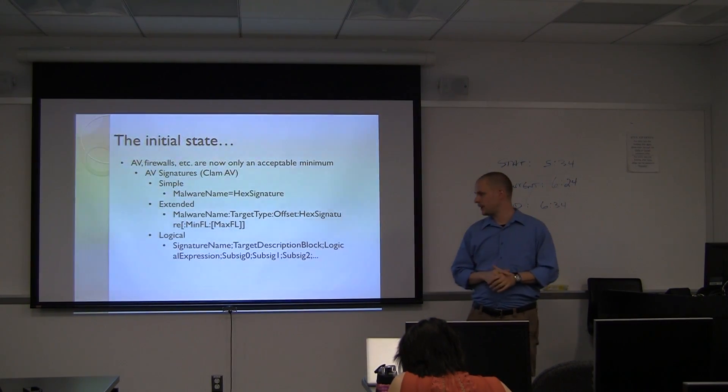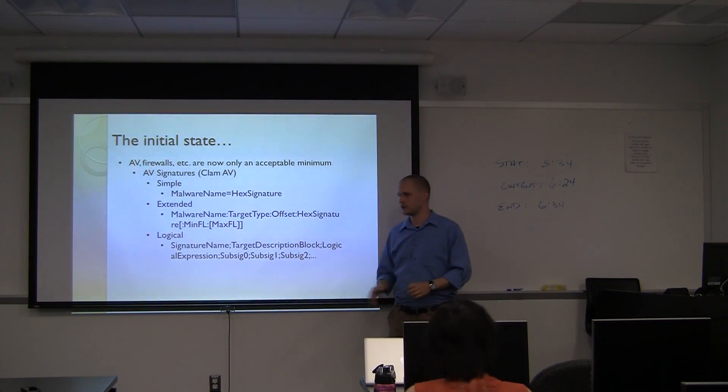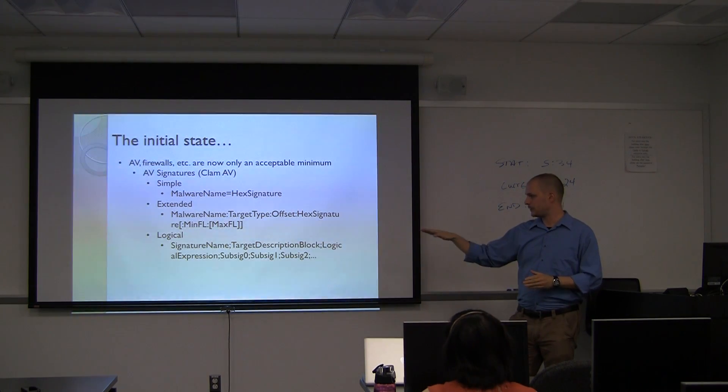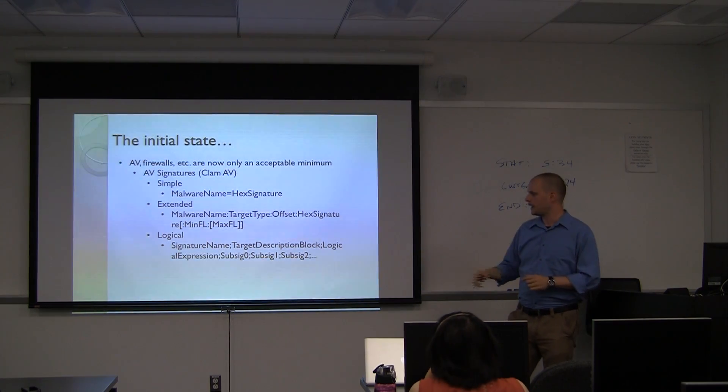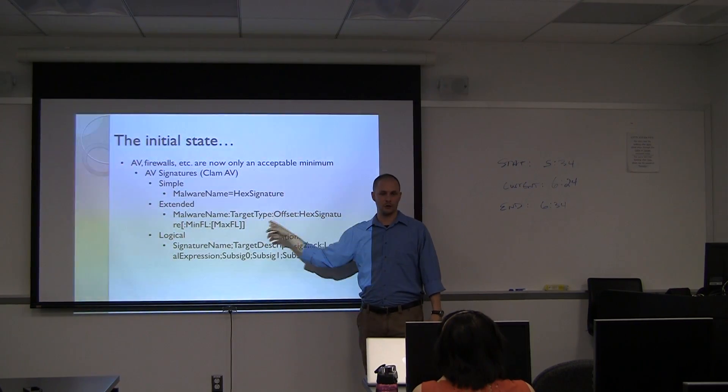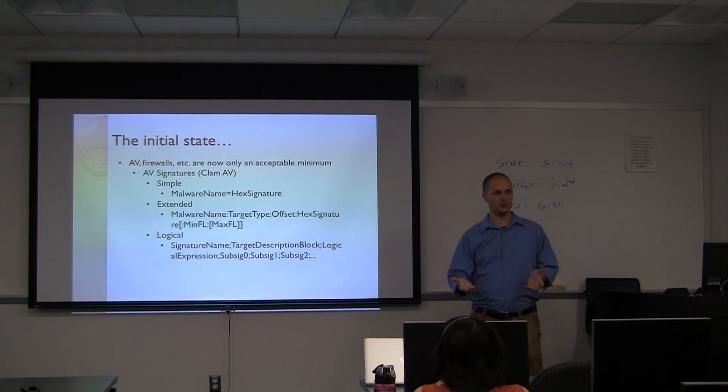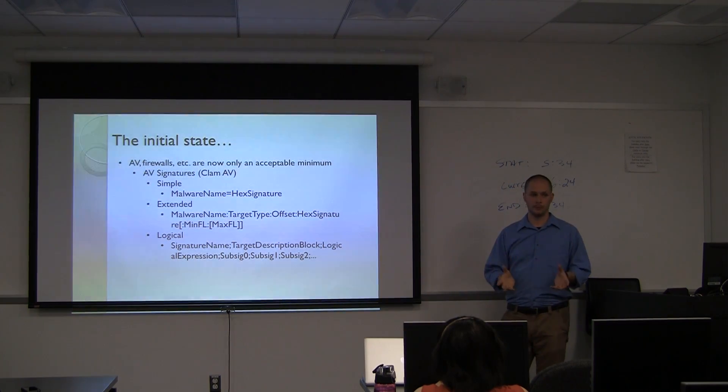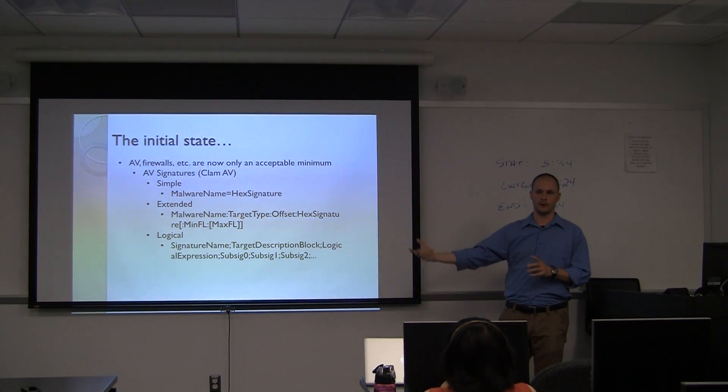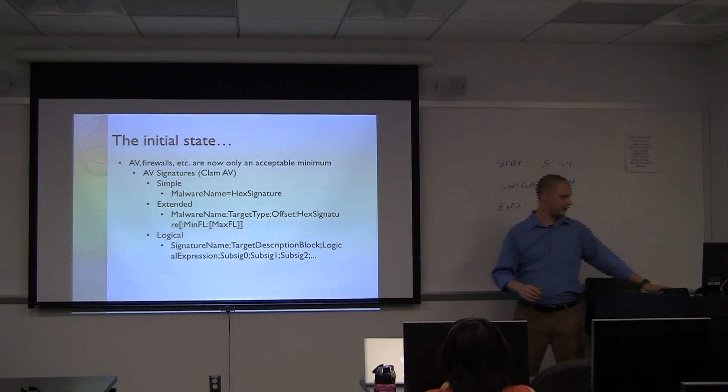Now there are also logical signatures which are a little bit more complicated to create because now you have to start doing math and logical operations. But it still essentially relies on the same stuff as the previous one but now you have target description blocks which is essentially more information about the header of the file. And then you have logical expressions where you can also have sub-signatures. So you have sub-signature zero, sub-signature one. And what that means is that you essentially have either extended or simple signatures and you're doing logical operations against those sub-signatures. This is obviously a lot more complex but it actually gives you the ability to do more complex matching. So if the offset is off by a little bit, for instance, then you can do a logical operation that says, okay, look for the offset here or here or if it's greater than a certain number look here, that kind of thing. So it's actually the way things are done.